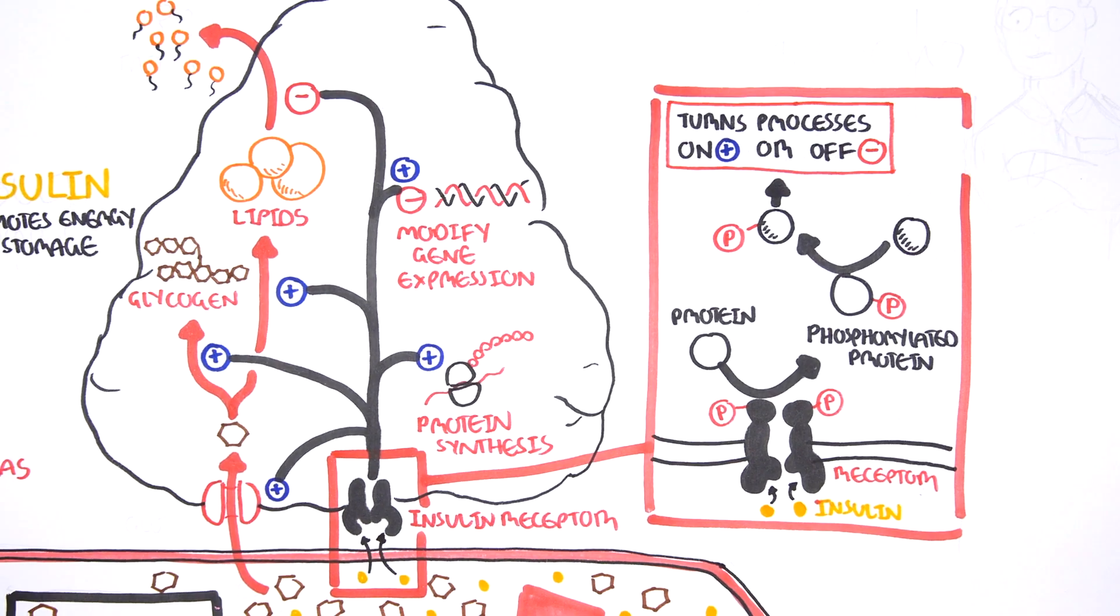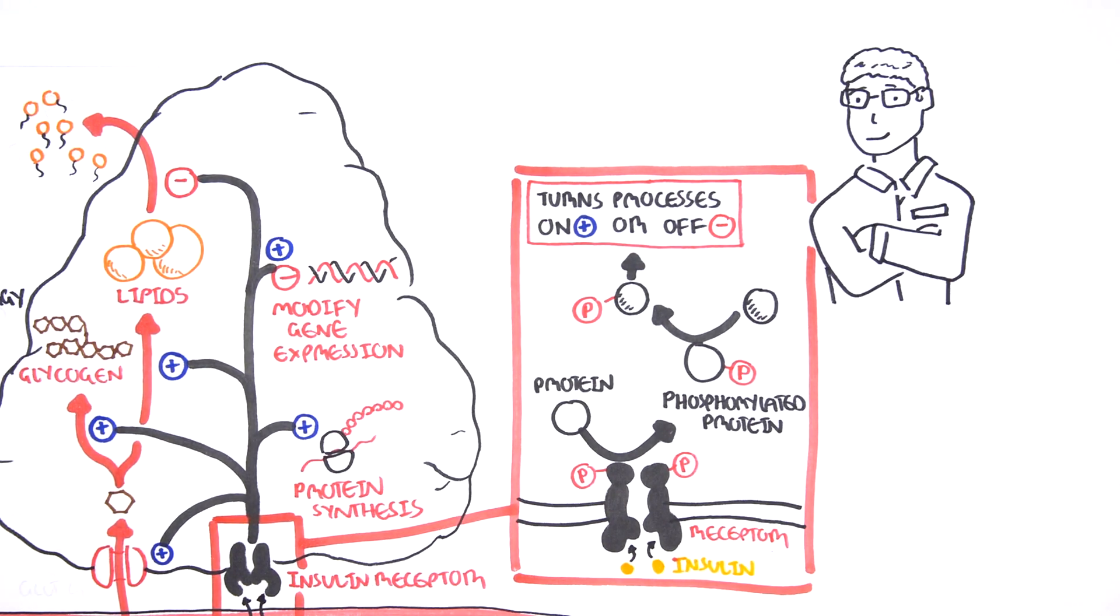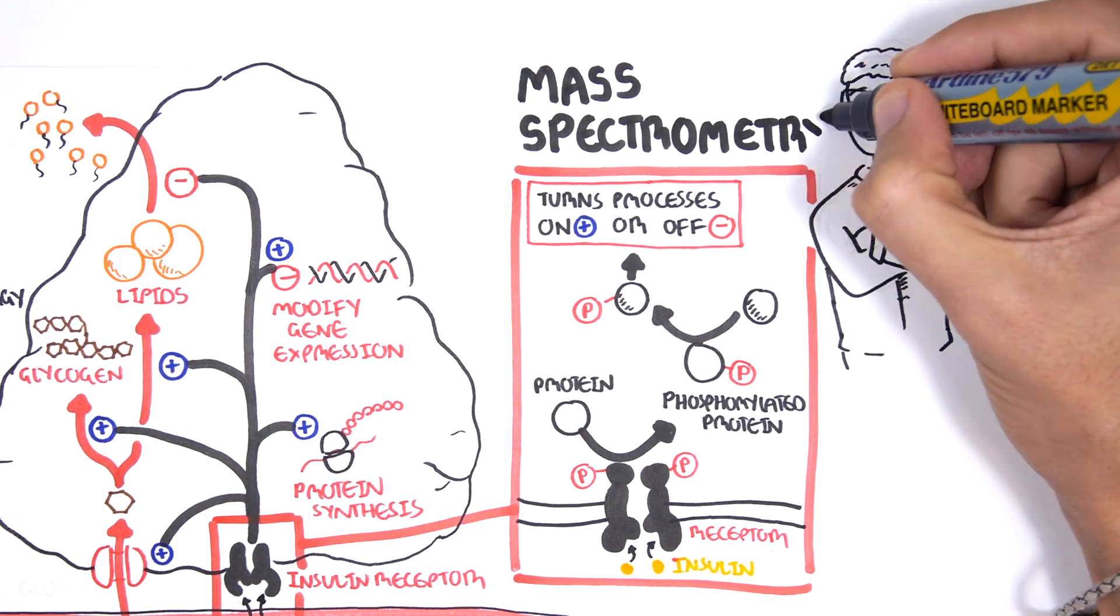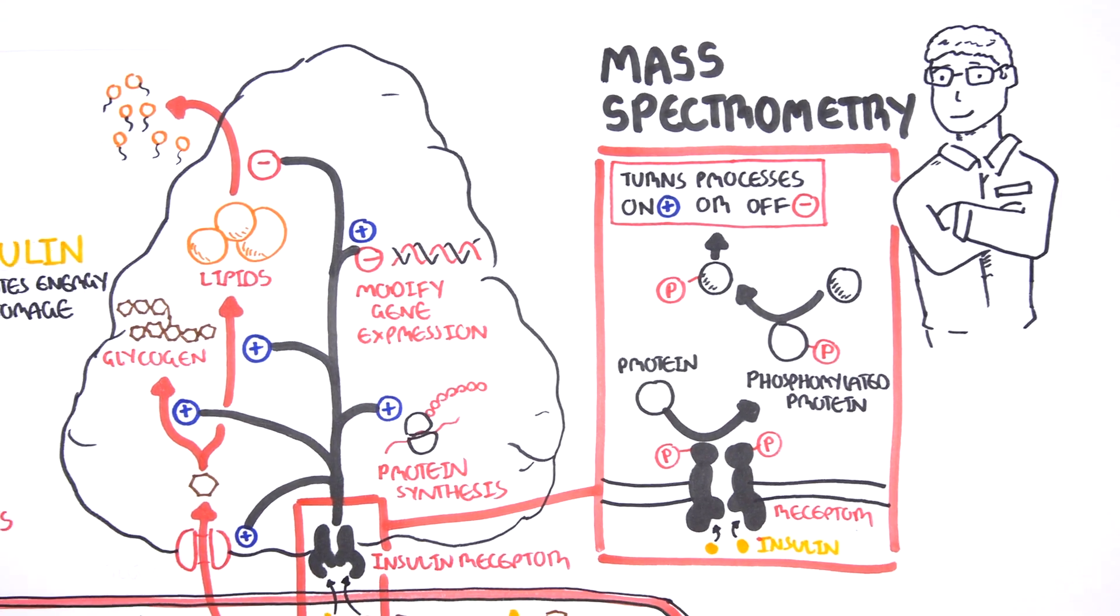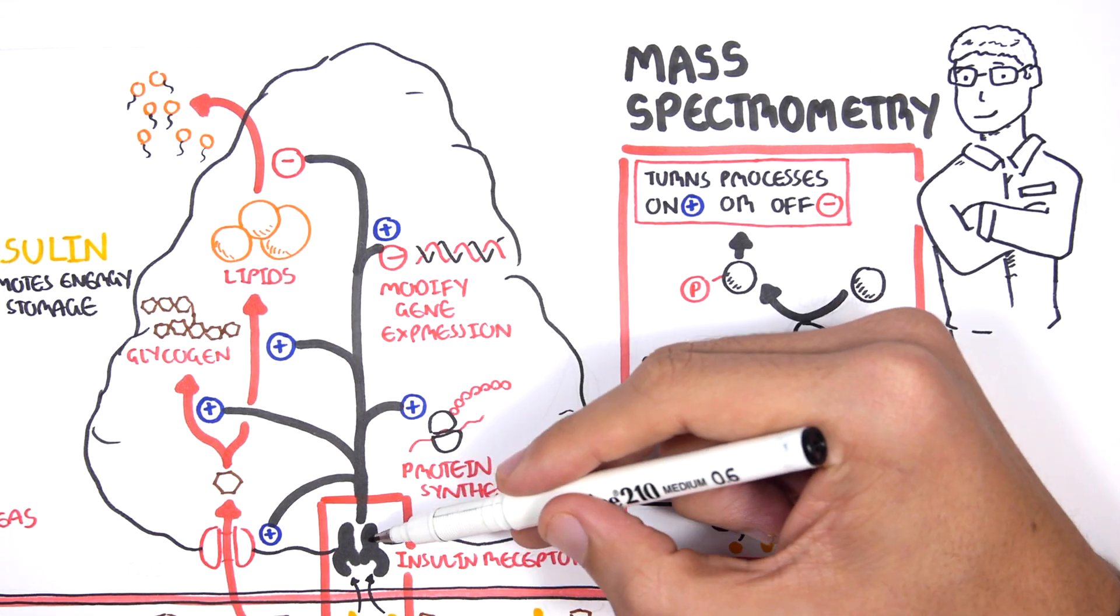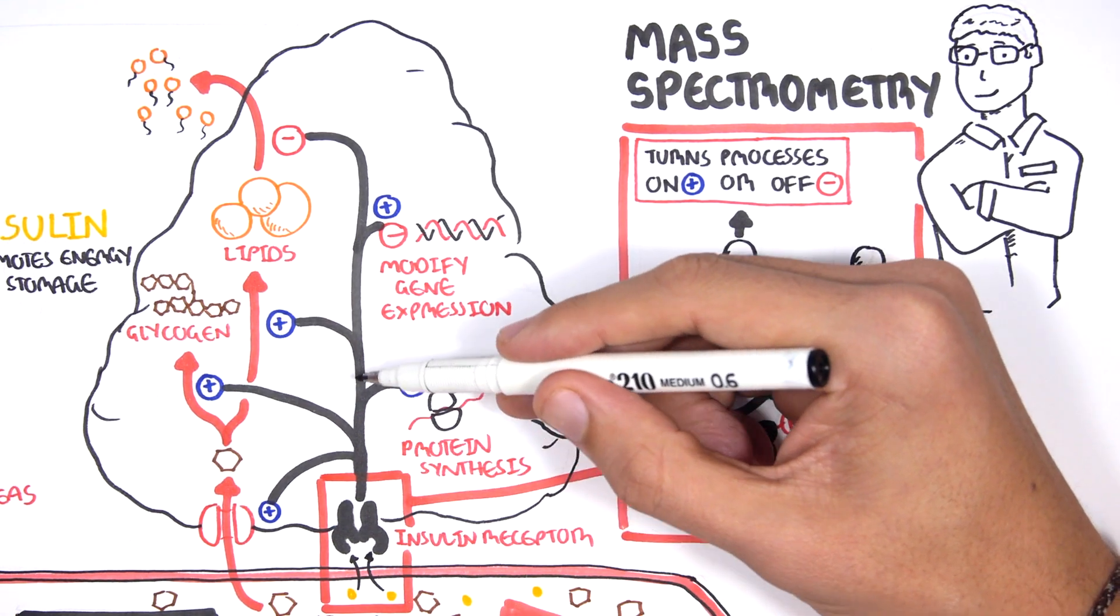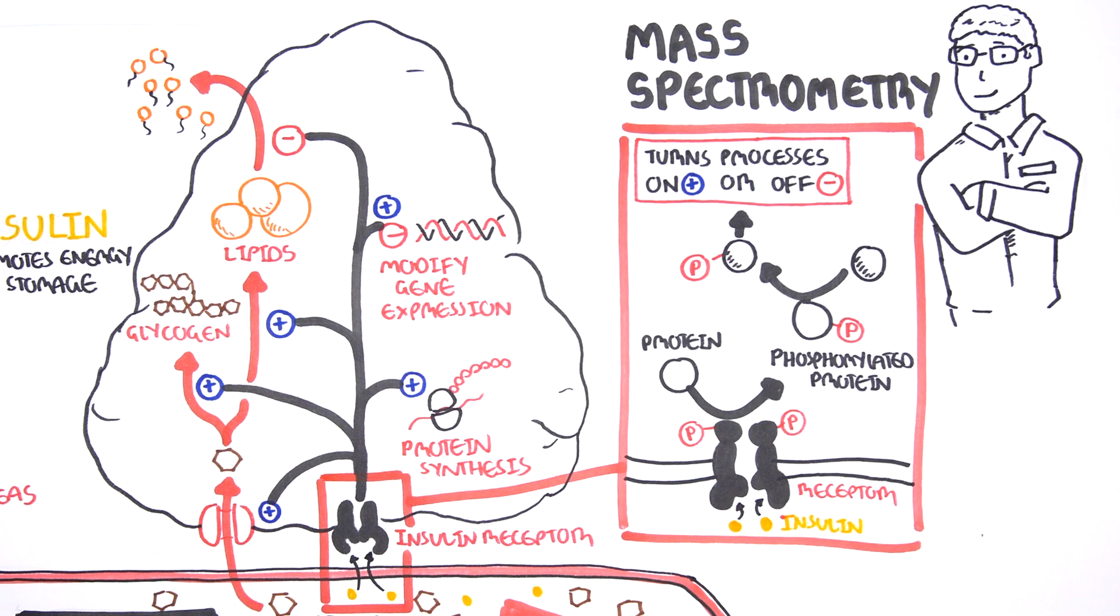Researchers can study protein phosphorylation in cells using a technique called mass spectrometry. Recent studies in the fat cell reveal that following insulin stimulation, many thousands of changes in protein phosphorylation occur.